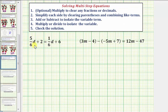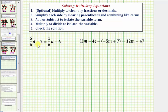Notice how our equation here contains fractions. So we can perform the optional step one, which says to multiply to clear any fractions or decimals. Because both fractions have a denominator of six, we have the option of clearing the fractions by multiplying both sides of the equation by six.